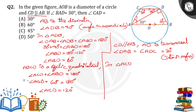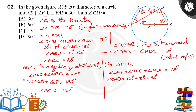In triangle ACD, the sum of angles equals 180 degrees. Therefore, angle CAD plus angle ACD plus angle ADC is equal to 180 degrees. So angle CAD plus 120 plus 30 equals 180, giving angle CAD equal to 180 minus 150, that is equal to 30 degrees.